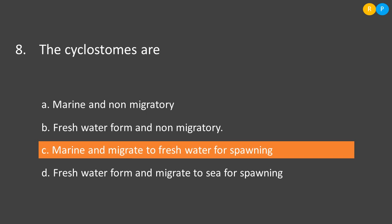Option A: marine and non-migratory — they are marine but they are migratory, so Option A is not correct. Option B: freshwater form and non-migratory — they are not freshwater animals; they are marine but migrate to fresh water. Option C: marine and migrate to fresh water for spawning — this is the correct answer, as they are marine animals that migrate to fresh water for spawning. Option D: freshwater form and migrate to sea for spawning. The correct answer is Option C.